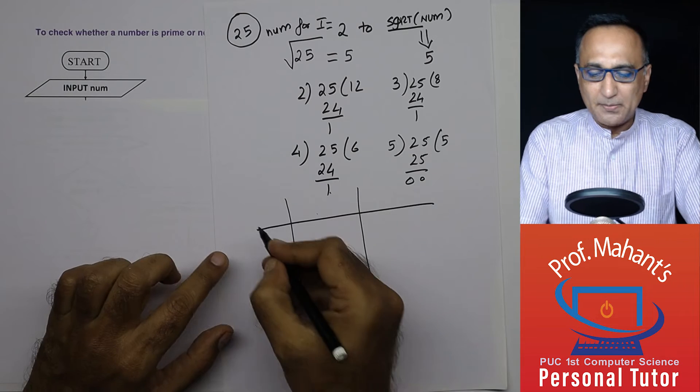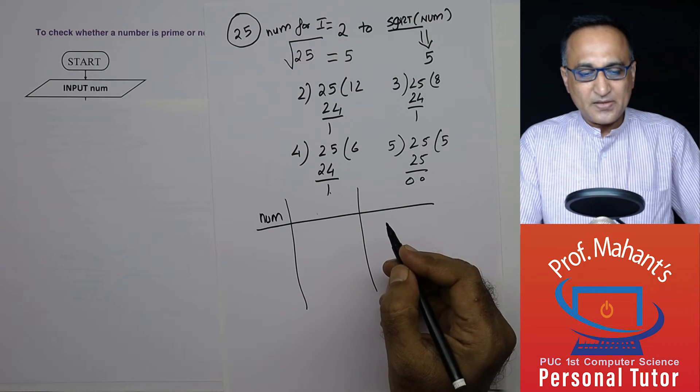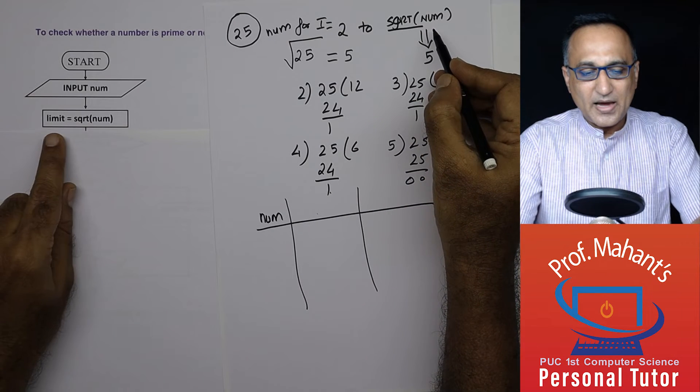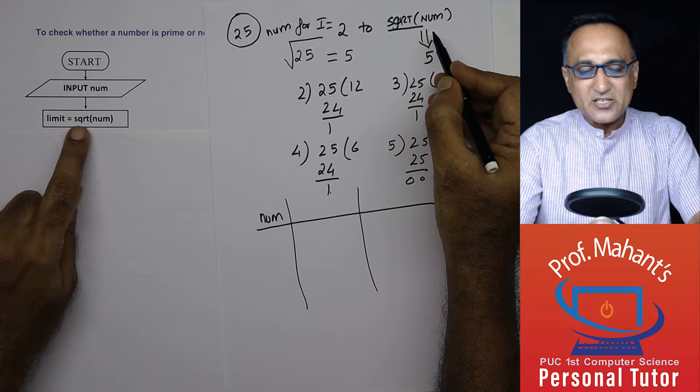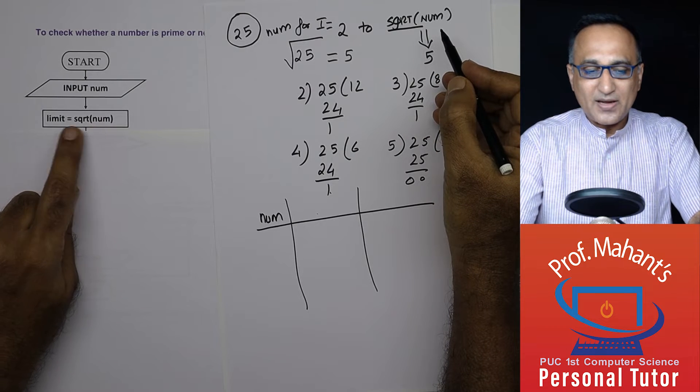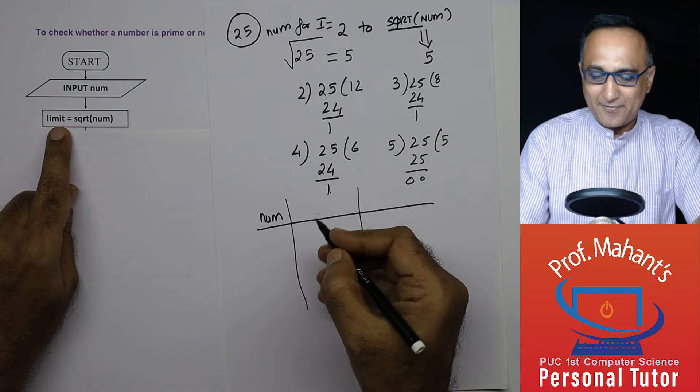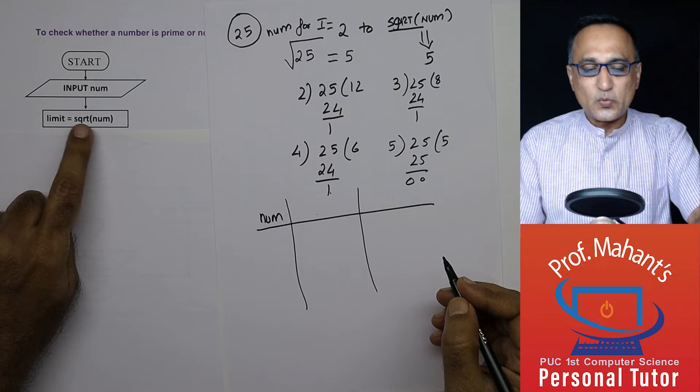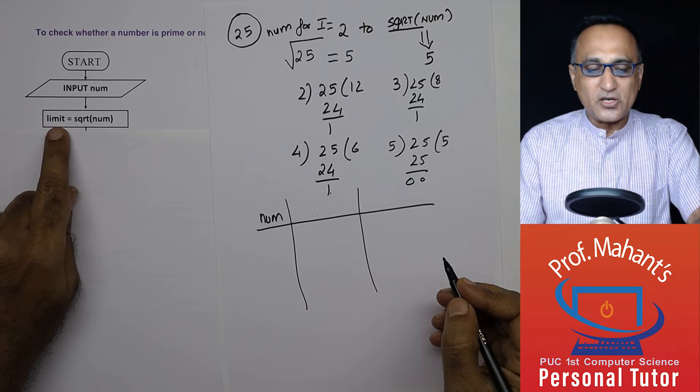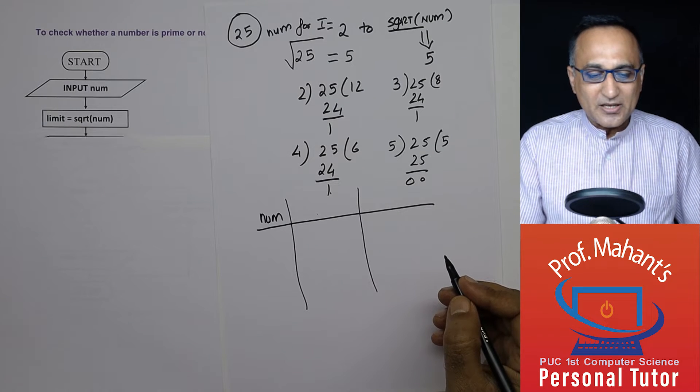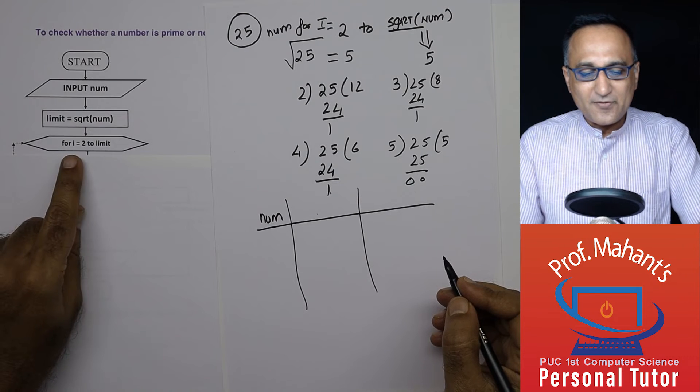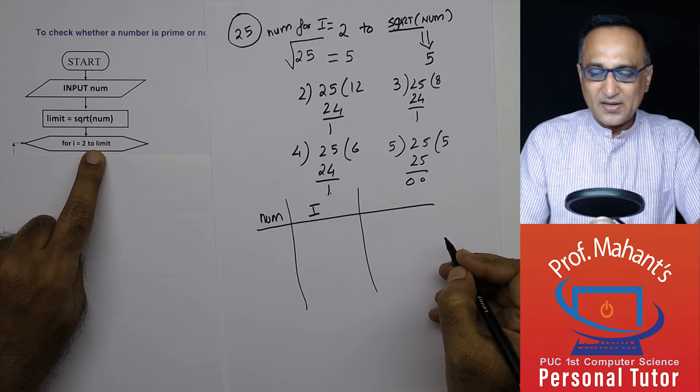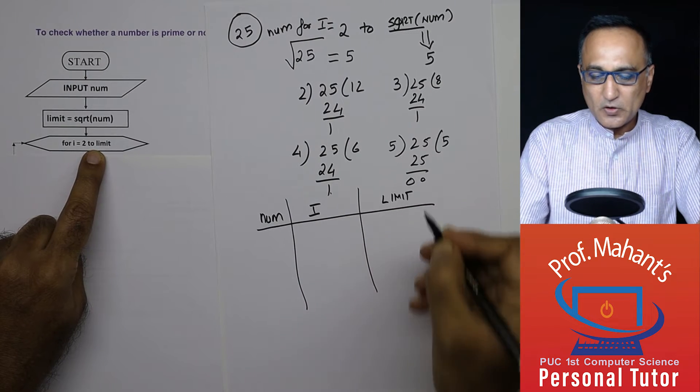I'm going to read a number. So my first column is going to be number. Then I'm using a calculation in place of square root of num, I'm calling it as limit. Limit is equal to square root of num. Suppose number is 25, limit will be equal to 5. So limit is nothing but square root of the input number. Suppose I enter 100, square root of 100 is going to be 10. So limit will be 10.